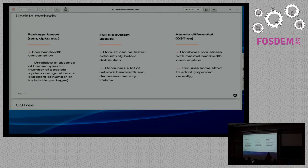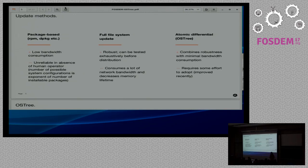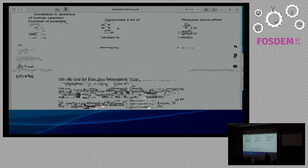For embedded systems it is good to have a full filesystem update — we download the full filesystem, flash the backup partition, and we're done. We can test it exhaustively in development and deliver to our client what is definitely working. But it also means we have to download the whole filesystem, which can be hundreds of megabytes, and our bandwidth is slow and unreliable. With OSTree, you can deploy virtual bootable filesystems but only download the difference between two filesystems, not the whole filesystem.